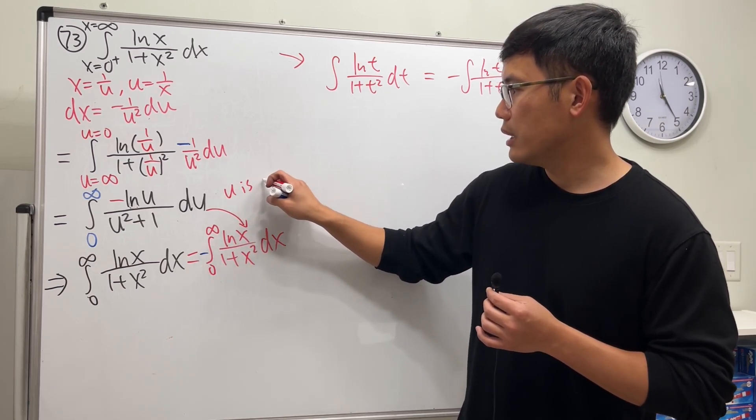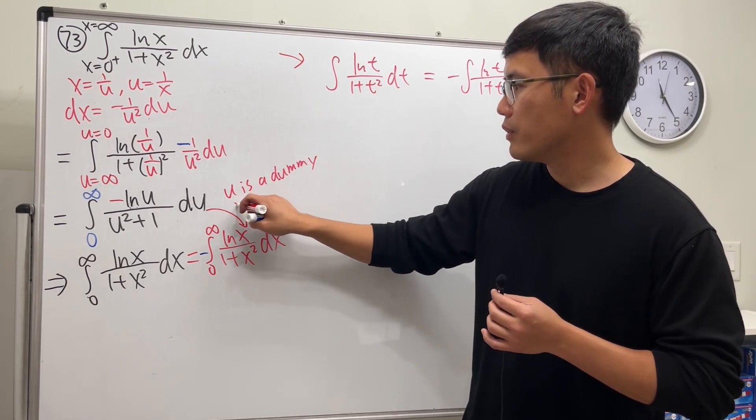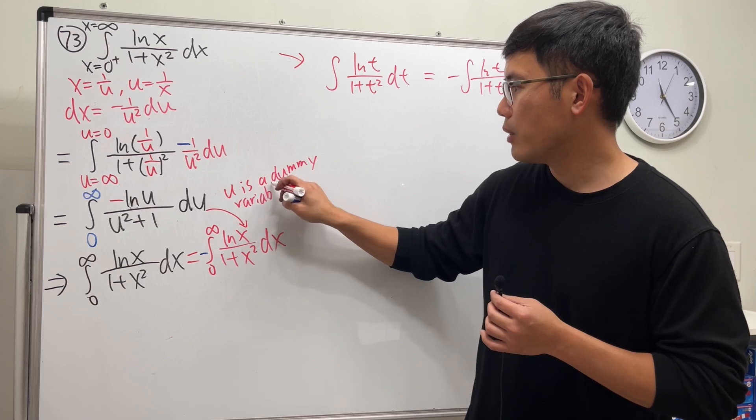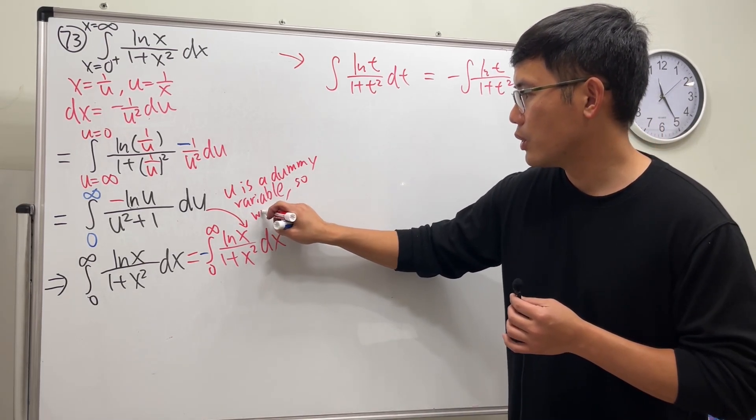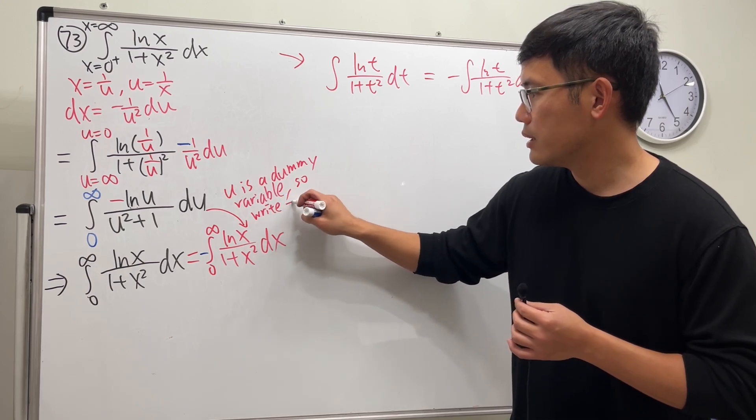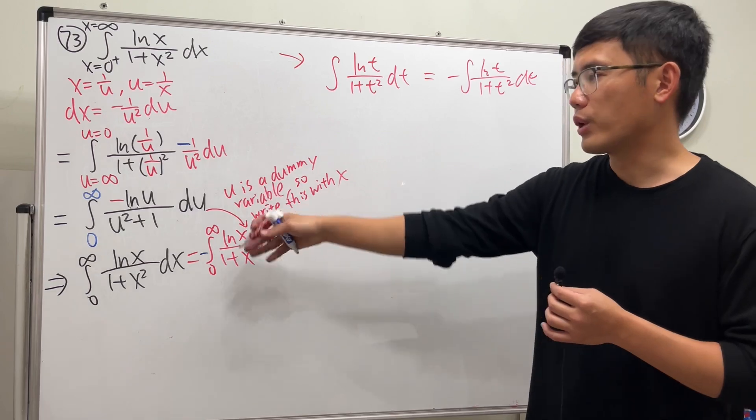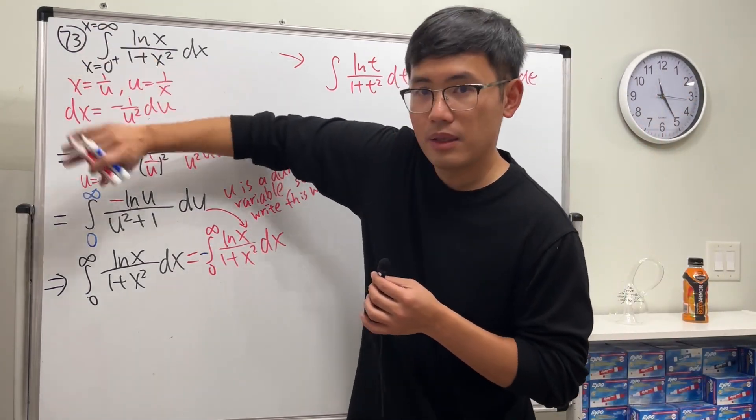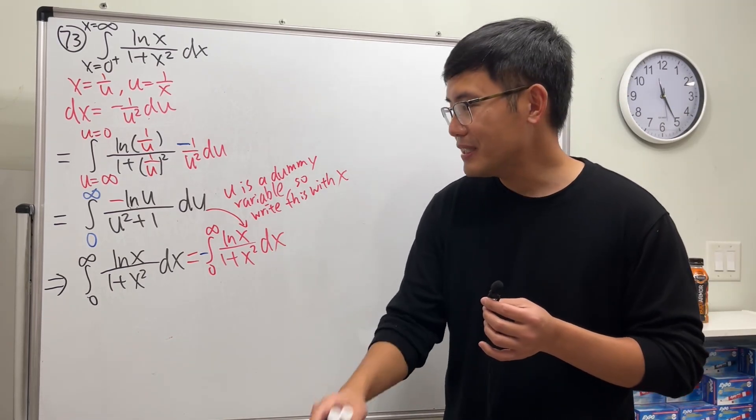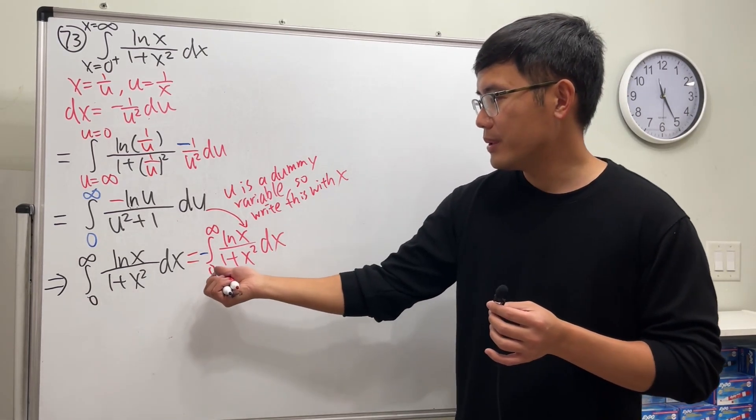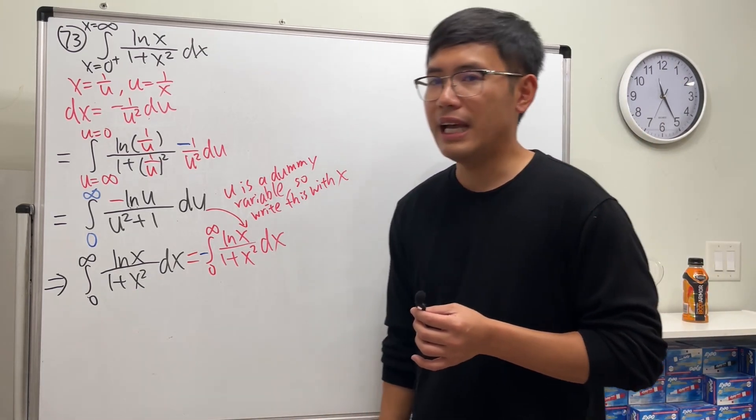u is the so-called dummy variable, so we can rewrite this with x, it's okay. So just in order, put x for all this and then we get that. Anyway, check this out: this integral in total is equal to negative itself. You can add this on both sides.